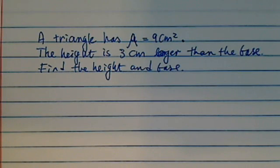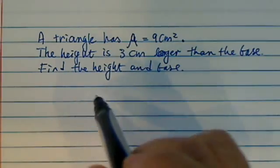Here we're given a triangle has area of 9 centimeters squared and also additional information. The height is 3 centimeters longer than the base and we're supposed to find the base and the height.